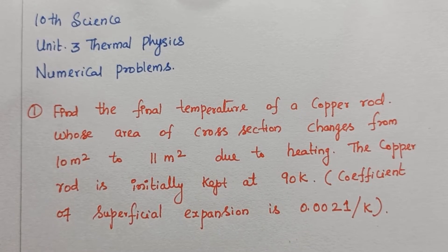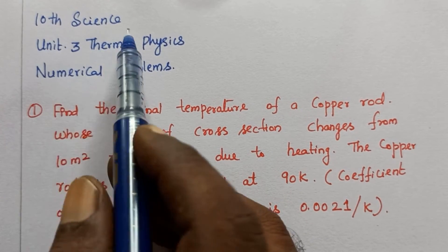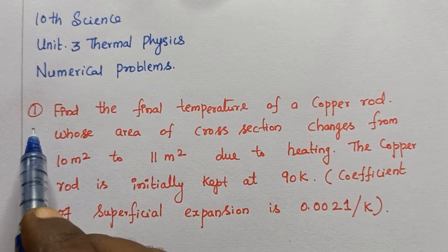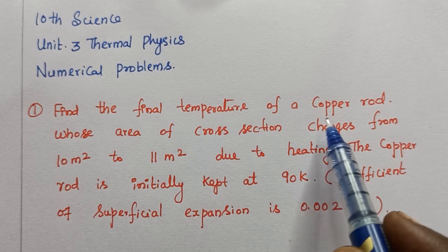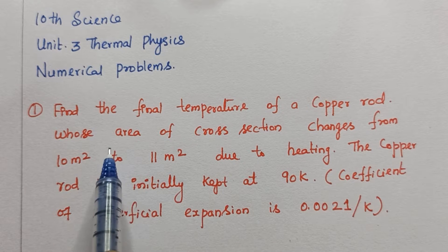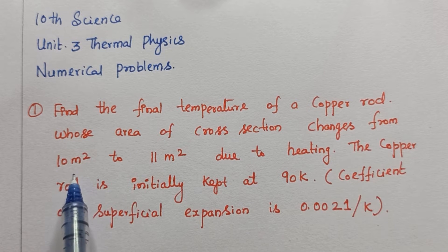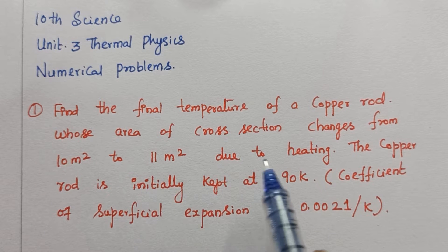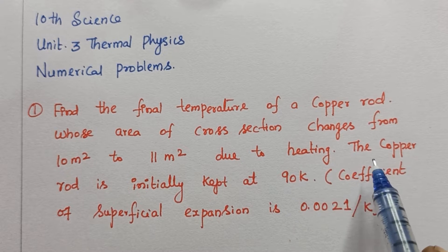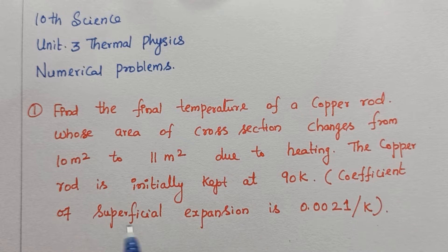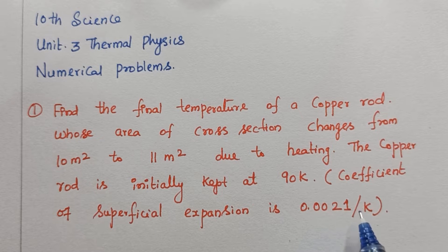Welcome to EMR Physics. I am Raju. 10th Science Unit 3, Thermal Physics, Numerical Problems, Problem No. 1. Find the final temperature of a copper rod whose area of cross section changes from 10m² to 11m² due to heating. The copper rod is initially kept at 90K. The coefficient of superficial expansion is 0.0021 per Kelvin.